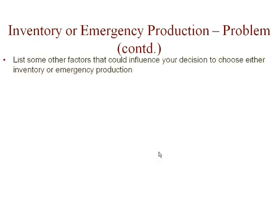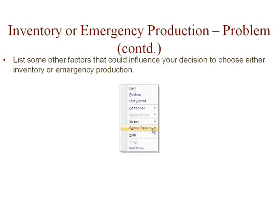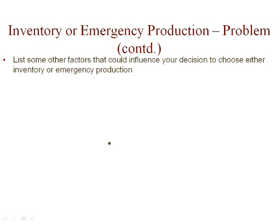Now, list some other factors that would influence your decision to choose either inventory or emergency production. We have to think about things other than cost, such as upcoming reconfiguration. If that is the case, we would keep less inventory because we would like to dispose of inventories as quickly as possible. So upcoming reconfiguration is one example where less inventory is preferred.